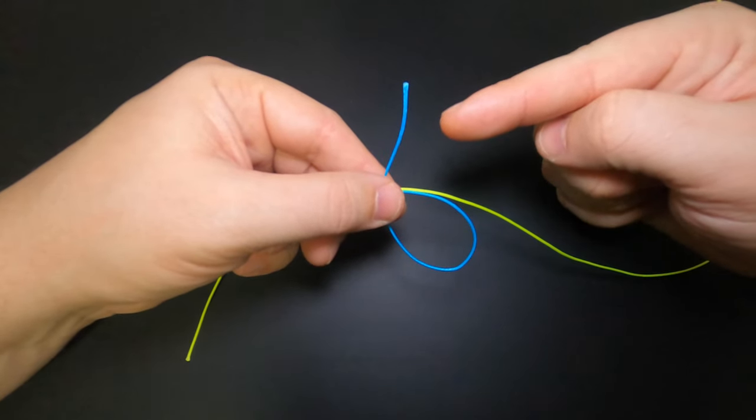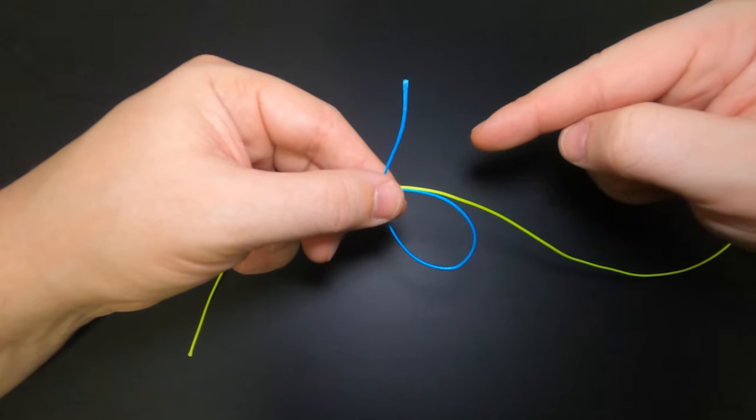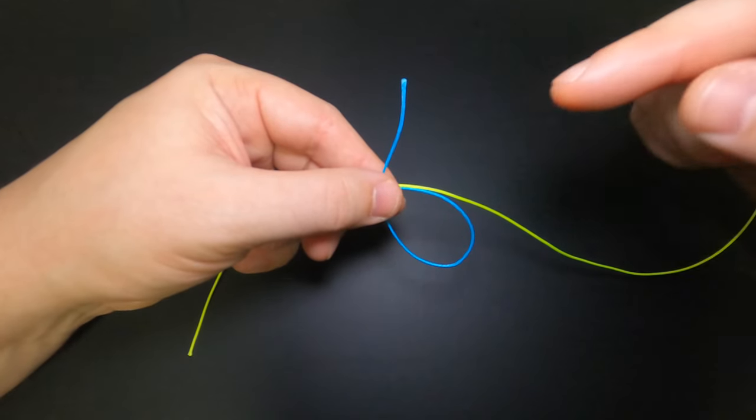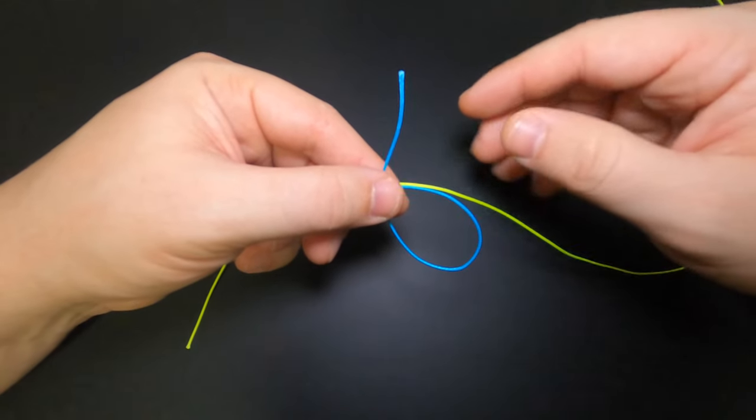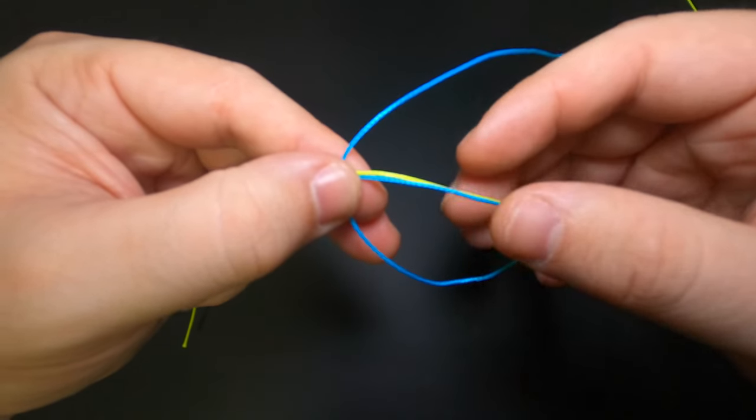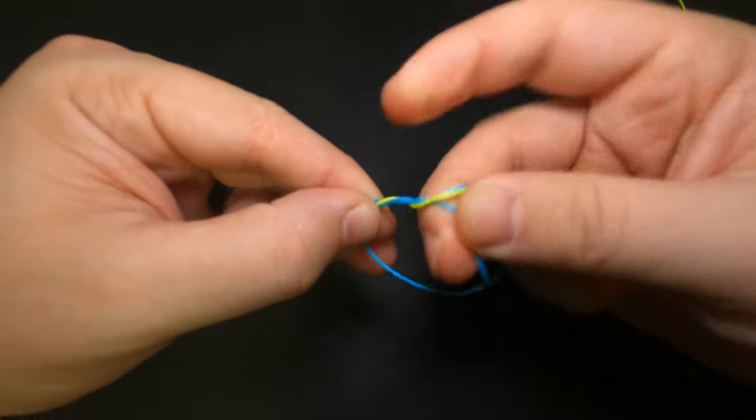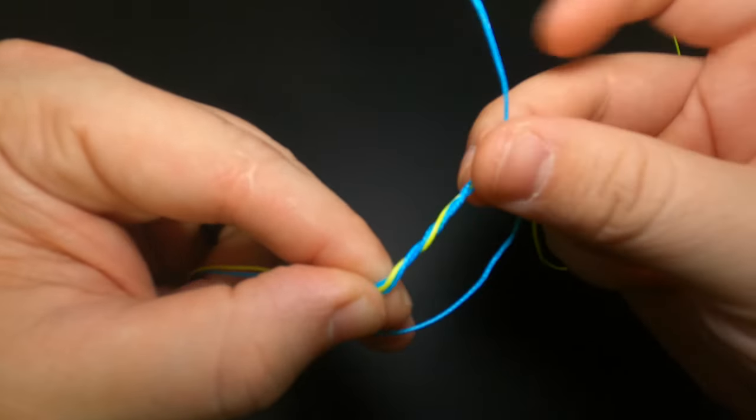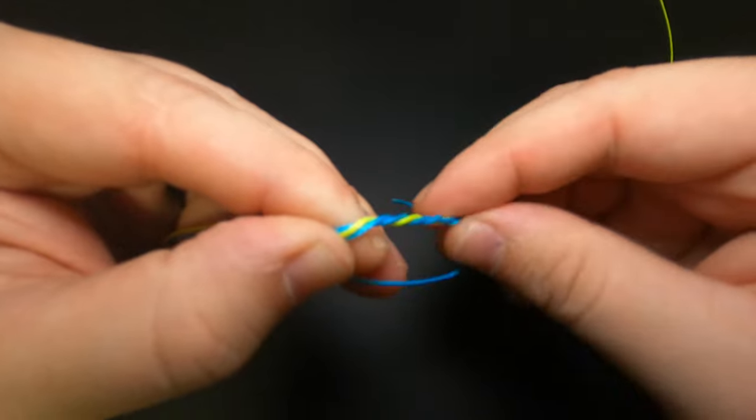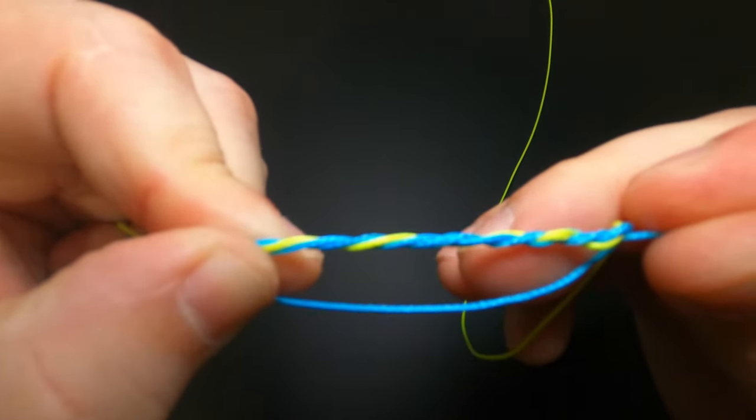At this stage we're going to take this tag end and we're going to wrap it around both lines inside of this loop. For heavier line I like to do four to six wraps and for lighter line six to ten wraps. These braids have a thicker diameter so we're going to do five wraps. We'll count them out: one, two, three, four, and five. Just like that.